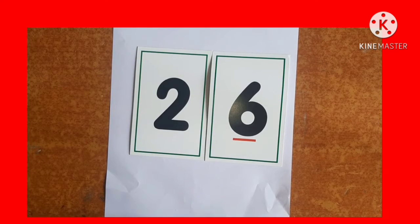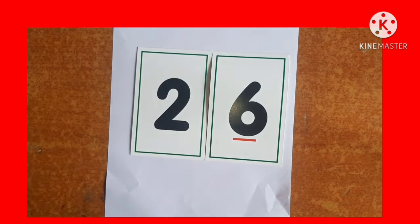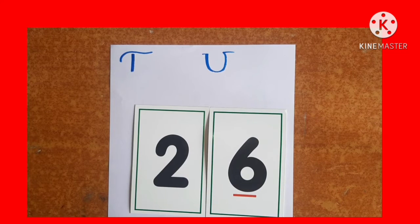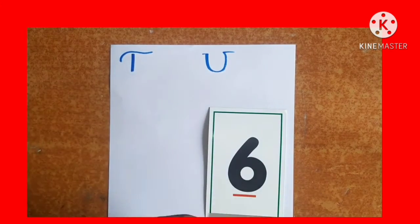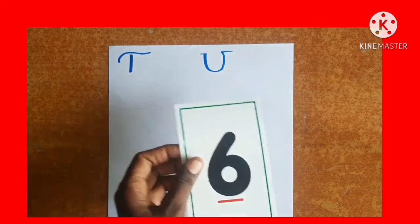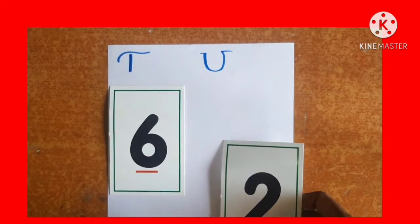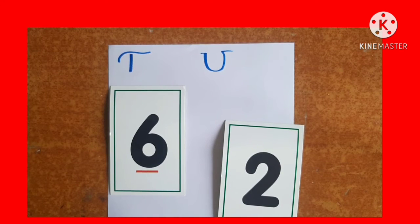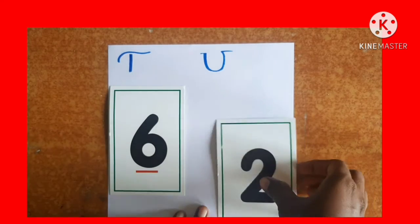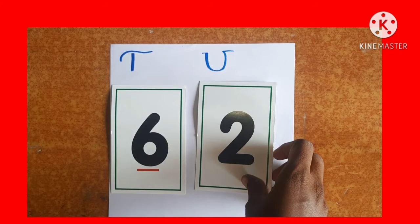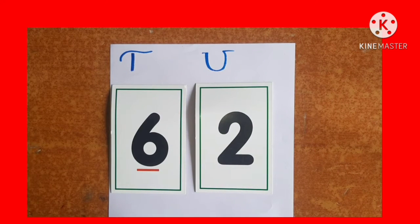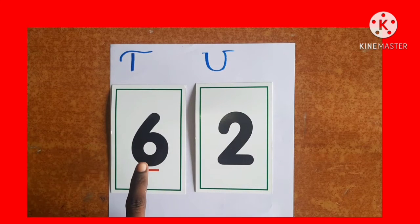Example 2: Form the biggest possible 2-digit number using 2 and 6. Which is the bigger number out of 2 and 6? Place it in the tens place of the place value chart. So 6 is the bigger number — put it in tens place. Place the other flashcard, which is 2, in the units place. So the biggest possible 2-digit number that can be formed using 2 and 6 is 62.